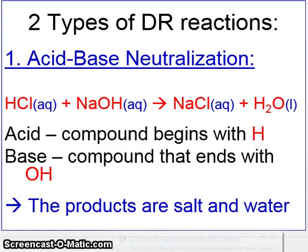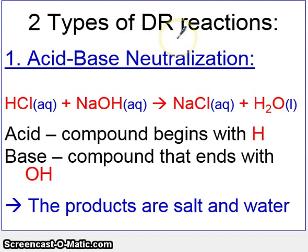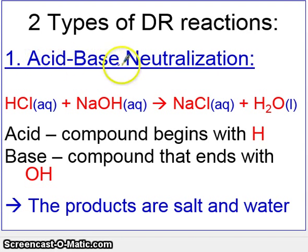This is Lesson 5 of Unit 9, and in this lesson we'll talk about two special types of double replacement reactions. The first type is called an acid-base neutralization reaction, and this involves, as you might imagine, an acid and a base.